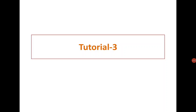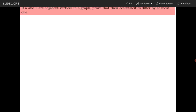Good morning everyone. Today we are going to discuss tutorial sheet 3, which is based on chapter 3 — graph trees. The first question: let u and v be adjacent vertices in a graph, then prove that their eccentricities differ by at most one.